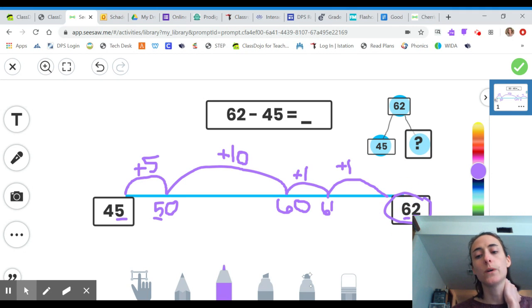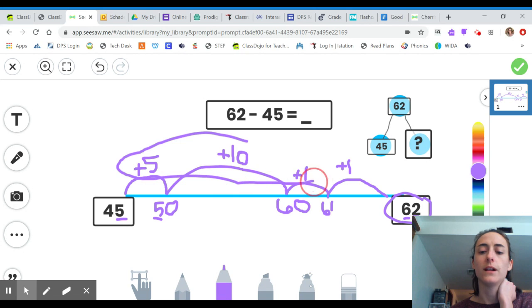Okay, so what we've found out is that 45 plus this much more, all of these hops that I took, makes 62. So this part we know, we didn't know this part, but now we do.